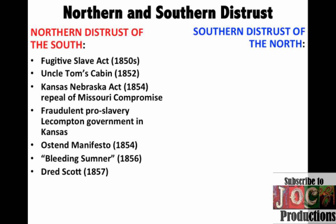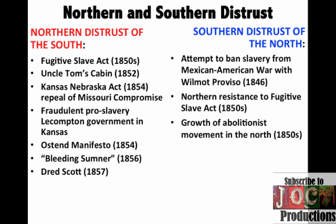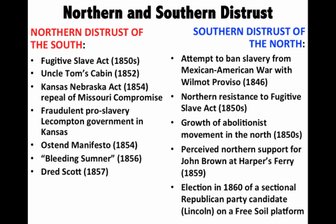For Southerners, they also had a distrust of the North. They felt the North was attacking their Southern way of life. They saw the Wilmot Proviso as an attempt to chip away at slavery in any territory won in the Mexican-American War. Northern resistance to the Fugitive Slave Act was seen as Northern hostility to the Southern way of life. The growth of the abolitionist movement threatened Southerners even though it remained a minority movement, and they reacted with their own defense of slavery. The perceived Northern support for John Brown and the events at Harpers Ferry, and ultimately the election of 1860 of sectional Republican Lincoln on a free soil platform, all created conditions where compromise was no longer possible and trust was at an all-time low.